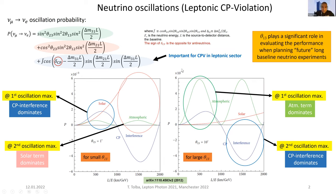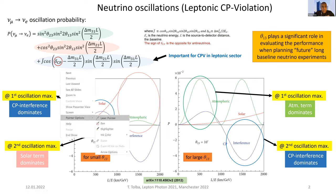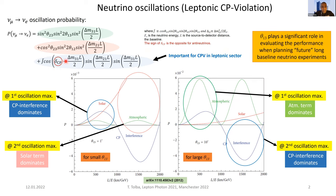Since our experiment is interested in CP violation studies in the leptonic sector, this last accelerator term plays a significant role, as it is the only term that includes a parameter for the delta CP or CP violating phase. For experimental approaches, it is important to study the probability distribution as a function of L over E, where L represents the baseline and E represents the neutrino beam energy. Another factor playing a significant role is the third mixing angle theta-one-three.